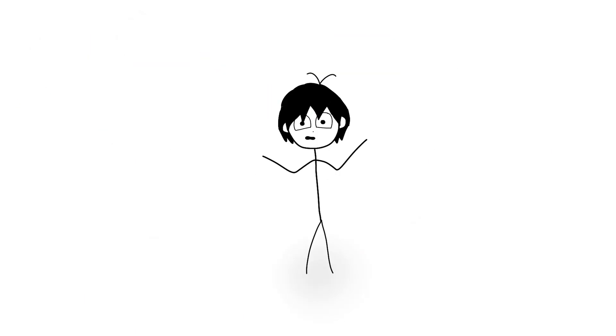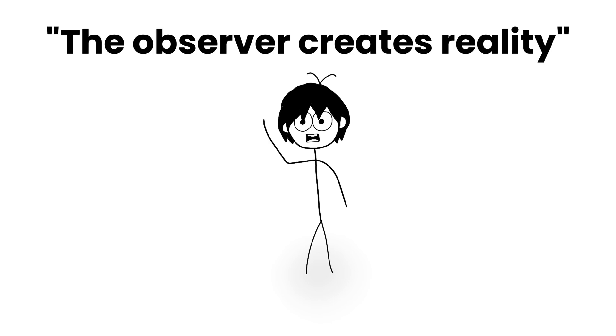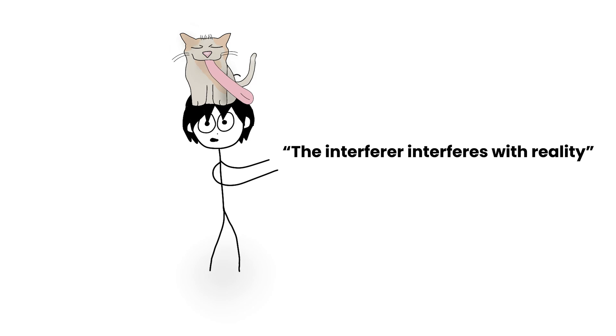If we were to fix the famous phrase, the observer creates reality, the more accurate version would be: the interferer interferes with reality. Which kind of makes a lot more sense, right?